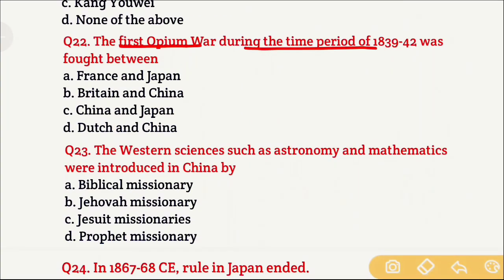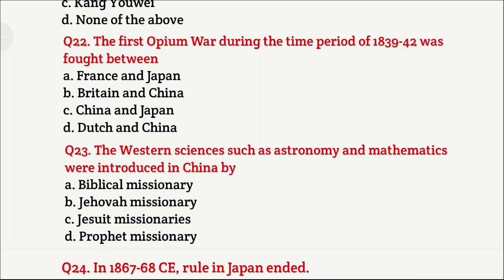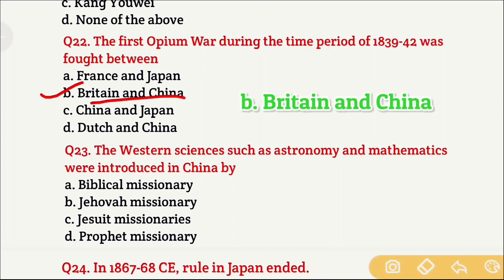Question 22: The first Opium War during 1839 to 1842 was fought between — Option A is France and Japan, Option B is Britain and China, Option C is China and Japan, and Option D is Dutch and China. The right answer is Option B, which is Britain and China.